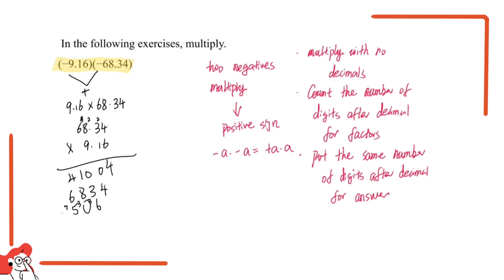We add them together: 4; 4 plus 6 is 9; 1 plus 8 is 9; 4 plus 6 plus 5 is 15, carry the 2; and we bring the 6 down. So we get 6,259,944.